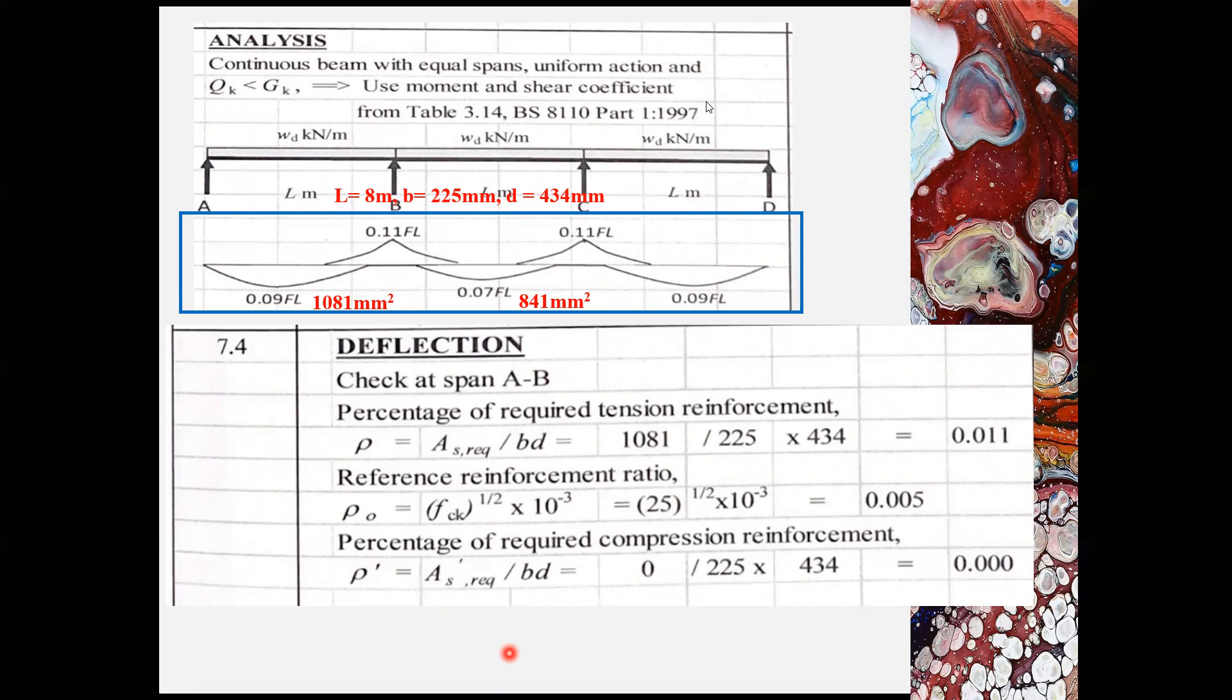There is always one good indication which span to be checked for the deflection. Refer to the greatest AS required. So in this case, span AB, the AS required is 1081 mm squared, and span BC is 841 mm squared. Therefore, the check of the deflections will be applied on span AB.